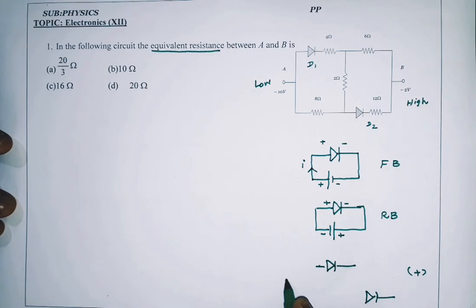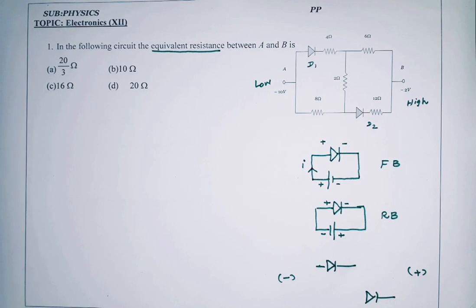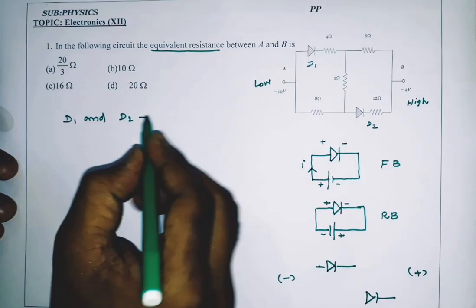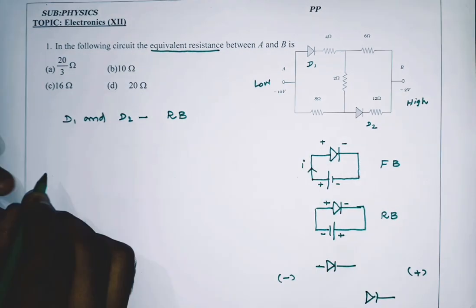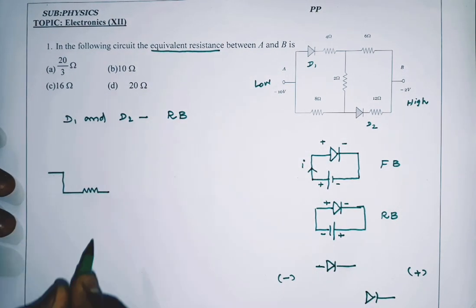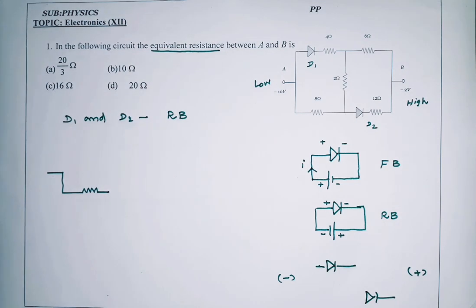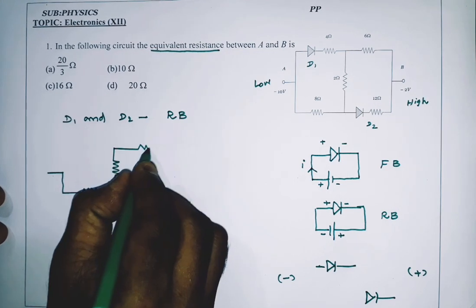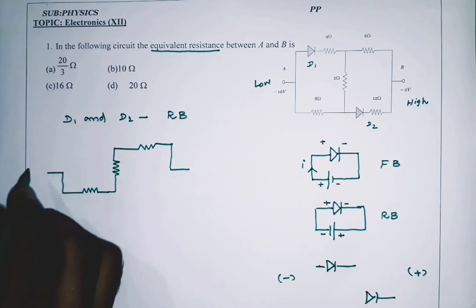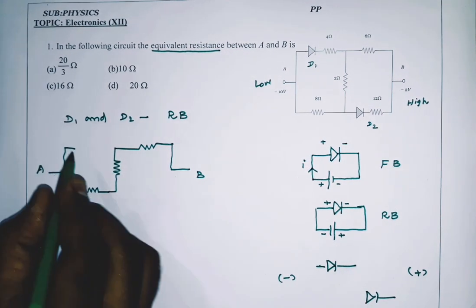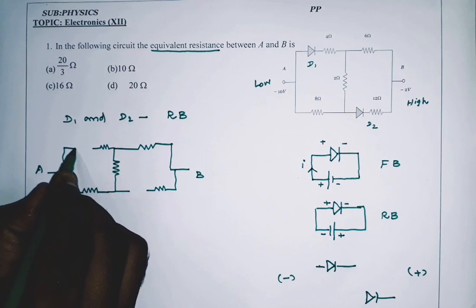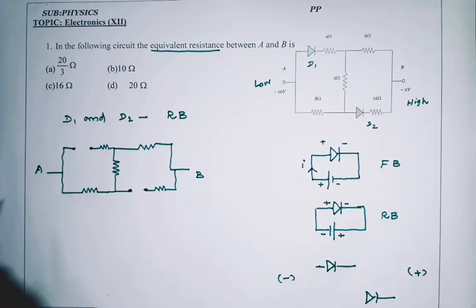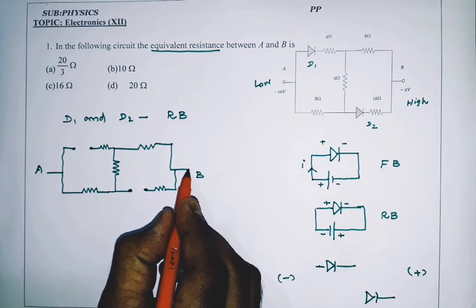This is the positive terminal, this side is the negative terminal. This is the diagram with two diodes — D1 and D2 are in reverse biasing condition. Now the current flow: this is point A, this is point B. The diode is disconnecting the circuit because a reverse biased diode is connected, so current flow is not possible. The higher potential is the actual path of current flow.